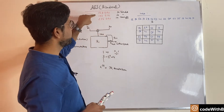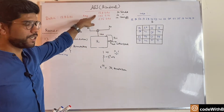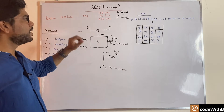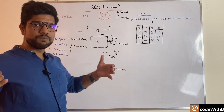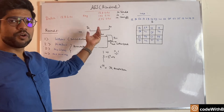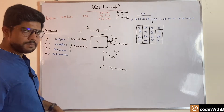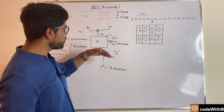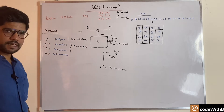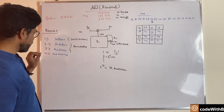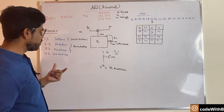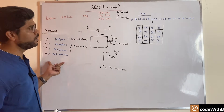We have one initial key K0 and the data D0. Both are XORed together and that becomes the input for the first round. Similarly, in each round we have sub-bytes, shift rows, and mix column steps, and whatever data we receive is then XORed with the key for that particular round.